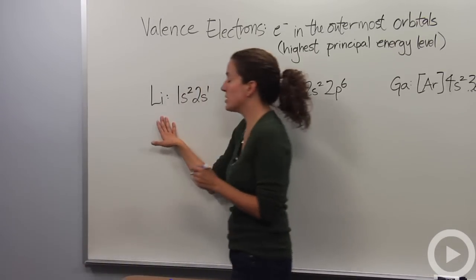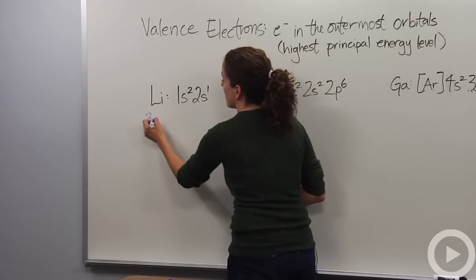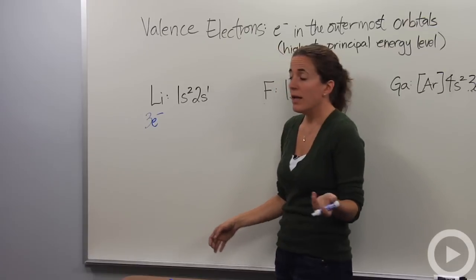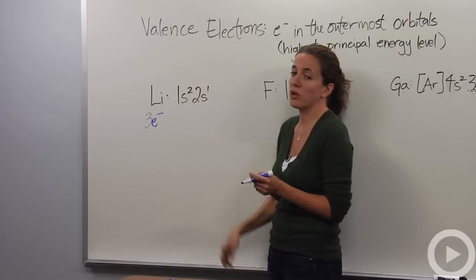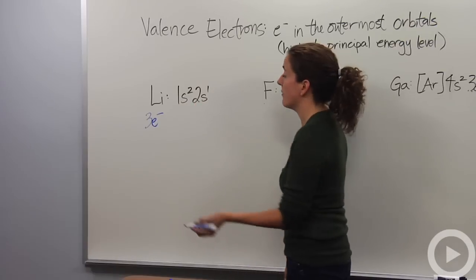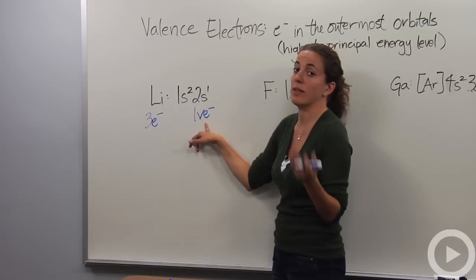Lithium, we know, has a total of three electrons using this electron configuration. It has three electrons, but it only has one valence electron, and the highest energy level is two, and there's only one electron in the second principal energy level. So we're going to say it has one valence electron. VE is going to indicate valence electrons.